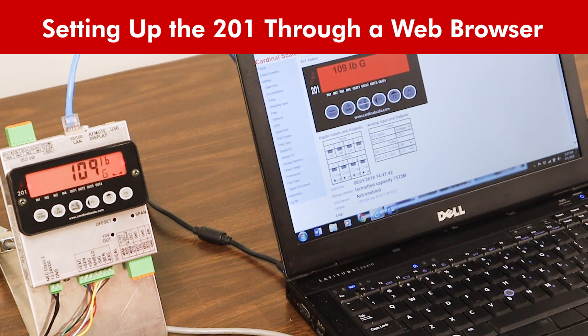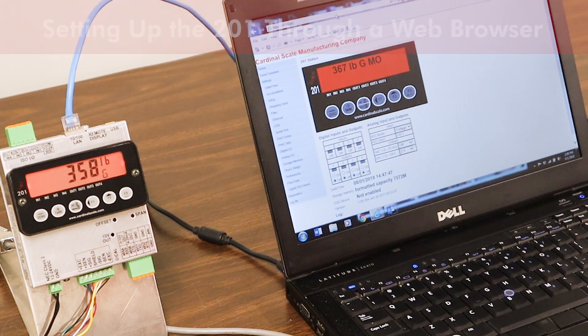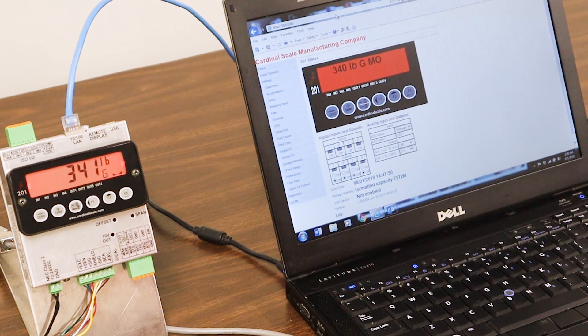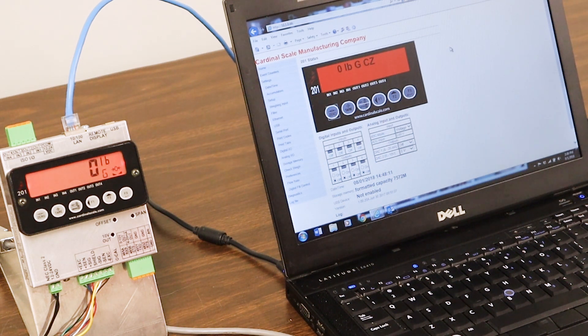I've got my Cardinal 201 indicator. Now as you can see it's real time. As I change the weight it changes on the screen. Let's go ahead and back it down a little bit. I'll get it close there. Let's go ahead and zero it. You can zero the screen also. Now most companies that are using the 201 with the PLC are programming the 201 through the web-based browser interface. They are not doing it through the face of the 201 display.